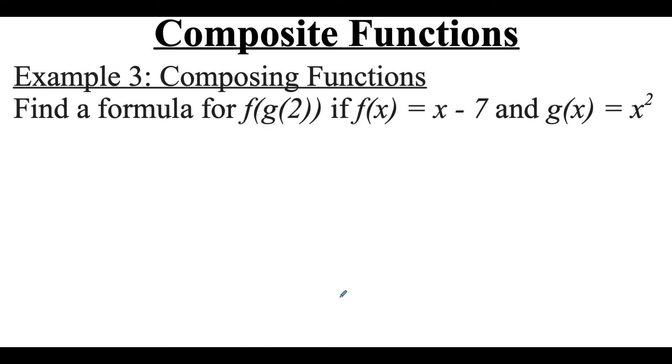Now in this example we're going to do f of g of 2. Earlier we did f of g of x, but now we're going to do a specific x value. When we did f of g of x, we ended up with the function x² - 7. But now with this 2, that means we're going to plug 2 in for x. So it's going to be 2² - 7. Well, 2² is 4, and 4 - 7 is -3.